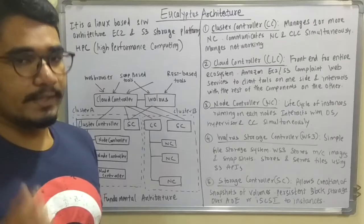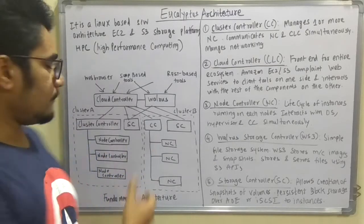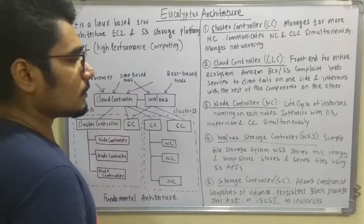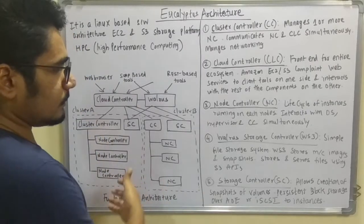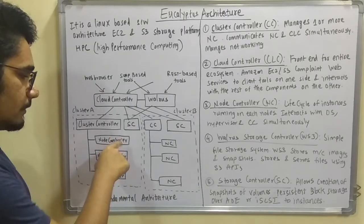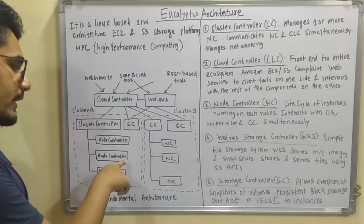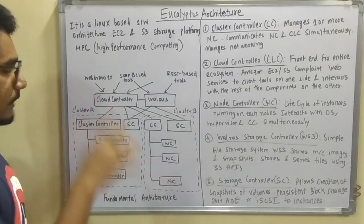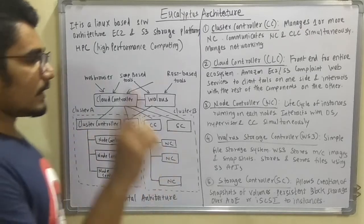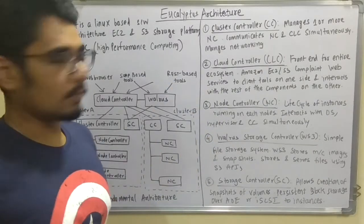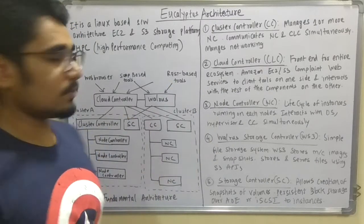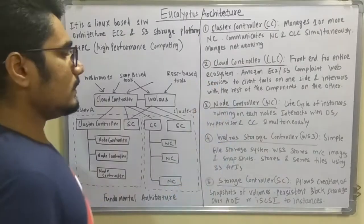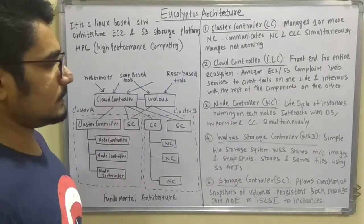Next is the Node Controller (NC), which is the smallest or most granular component in the Eucalyptus architecture. The Node Controller manages all the lifecycle of instances initiated on it — it takes care of one activity through its entire lifetime. Each activity is computed over a Node Controller, which is inspected by the Cluster Controller and then by the Cloud Controller. The NC also interacts with the operating system, hypervisors, and the Cluster Controller simultaneously.